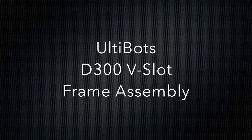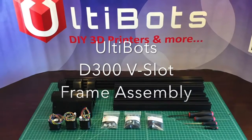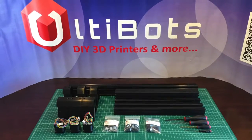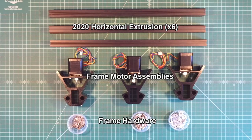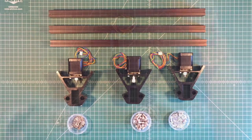Next in our video build series we will focus on the lower frame assembly. You will need six 2020 extrusions, three frame motor assemblies, and the frame hardware bag contents.